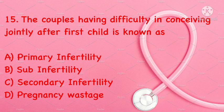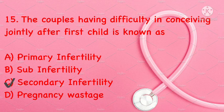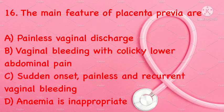Couples having difficulty in conceiving jointly after the first child is known as: primary infertility, soft infertility, secondary infertility, or pregnancy wastage. Correct answer is C: secondary infertility.